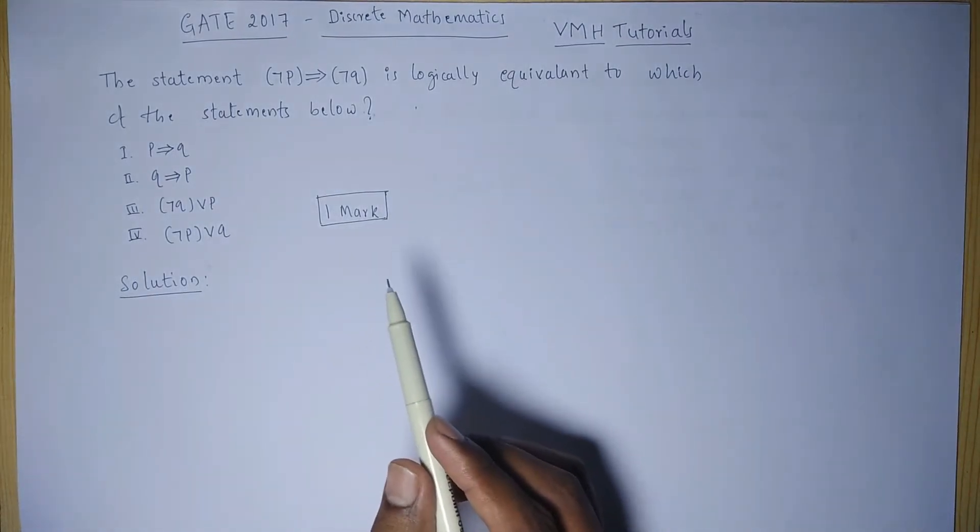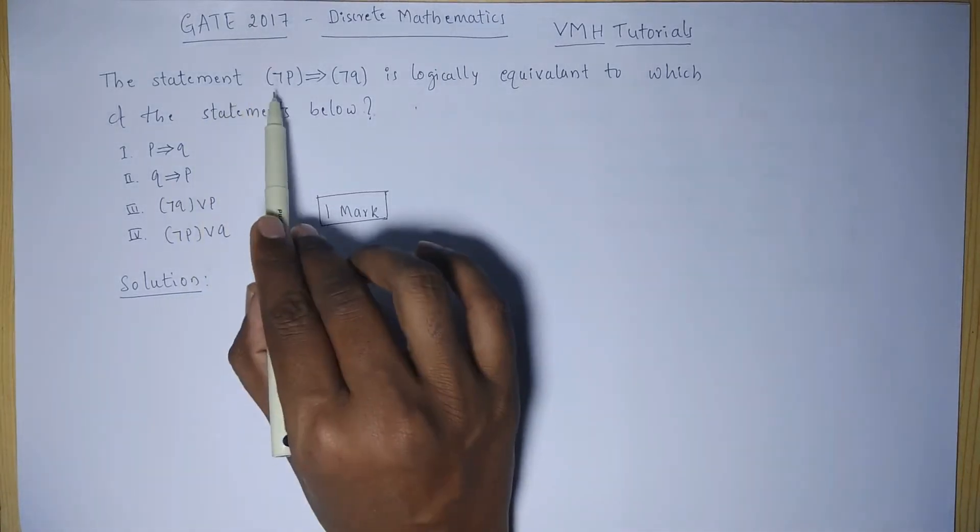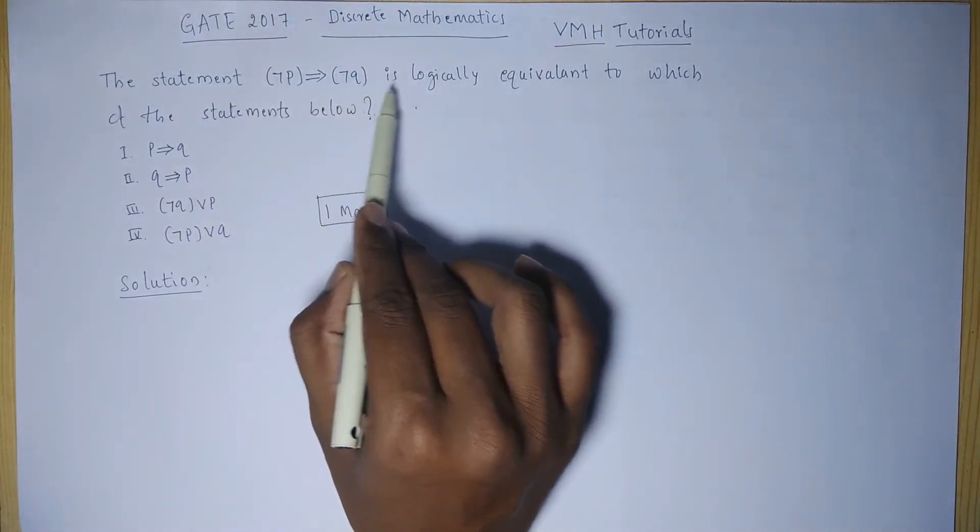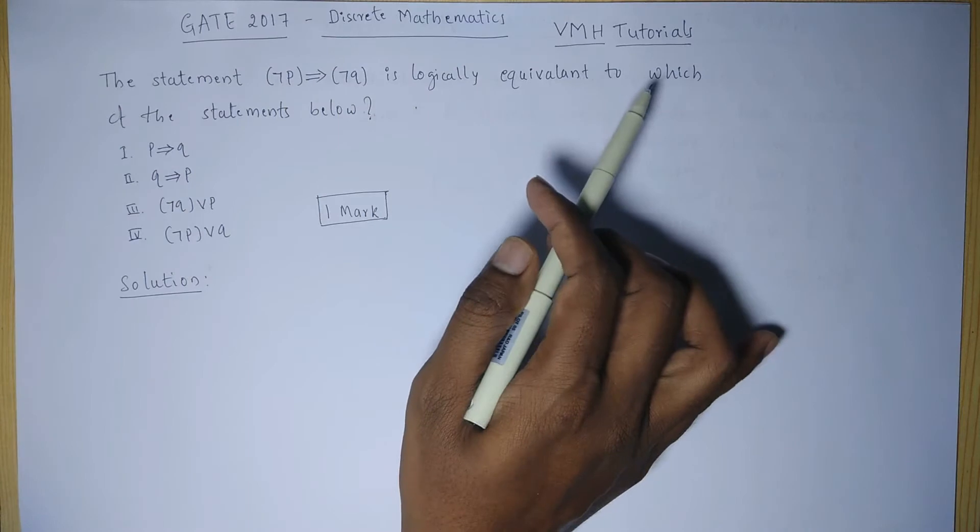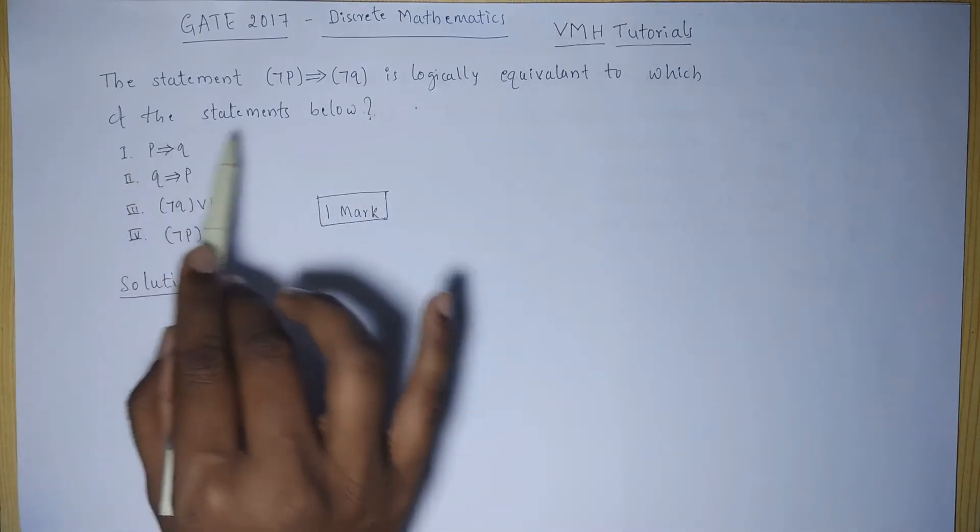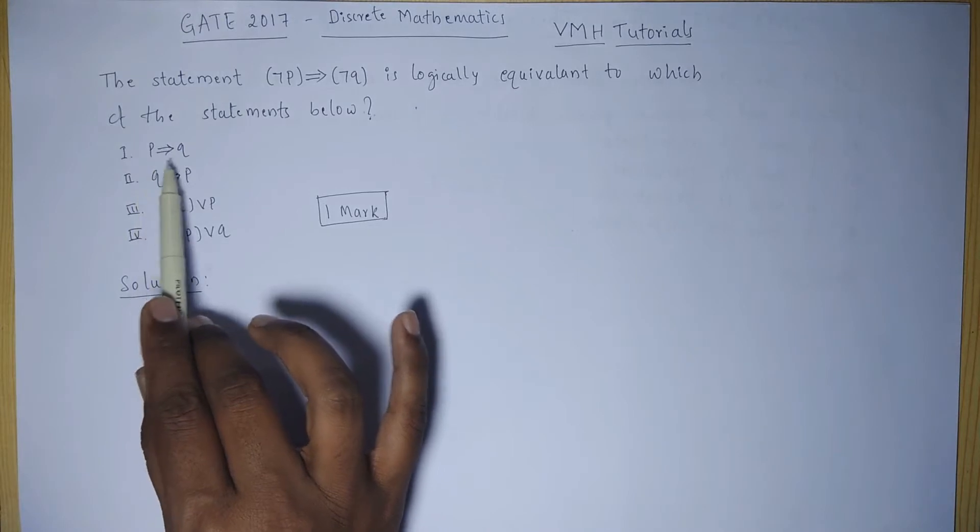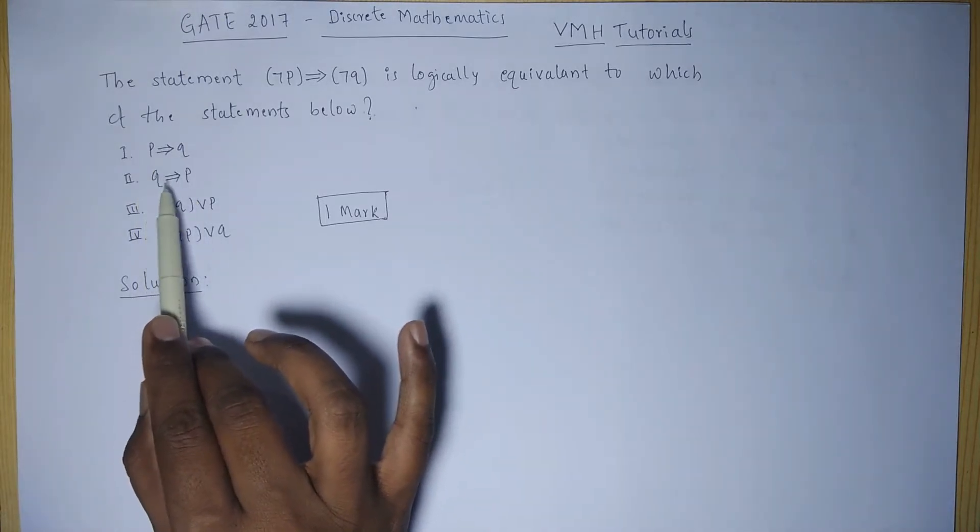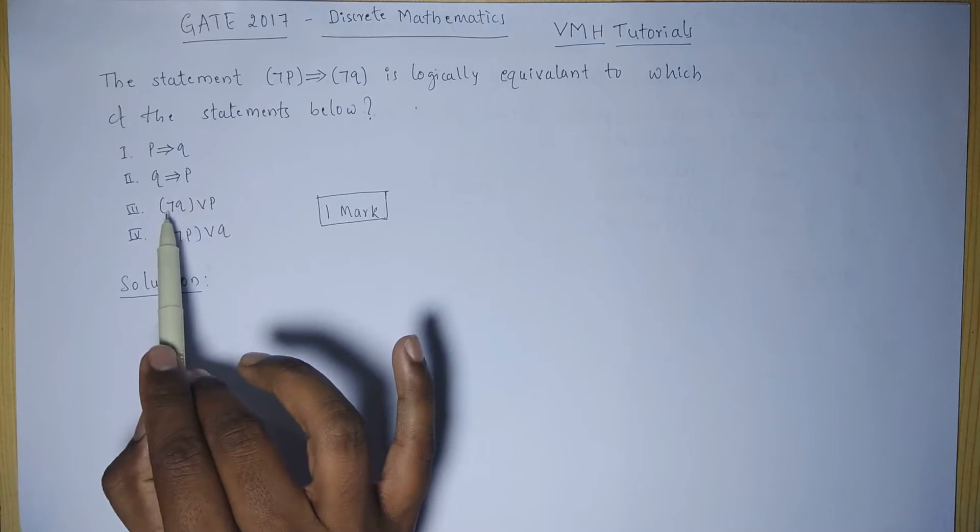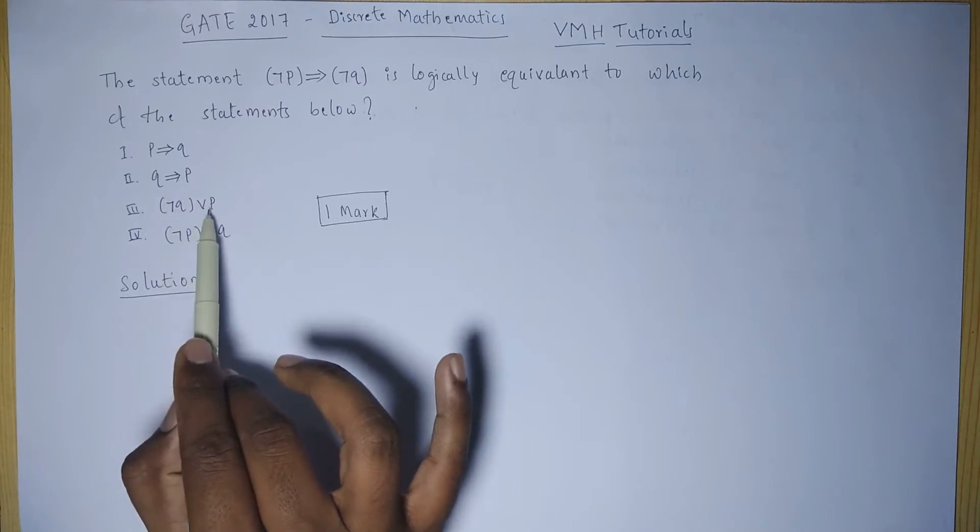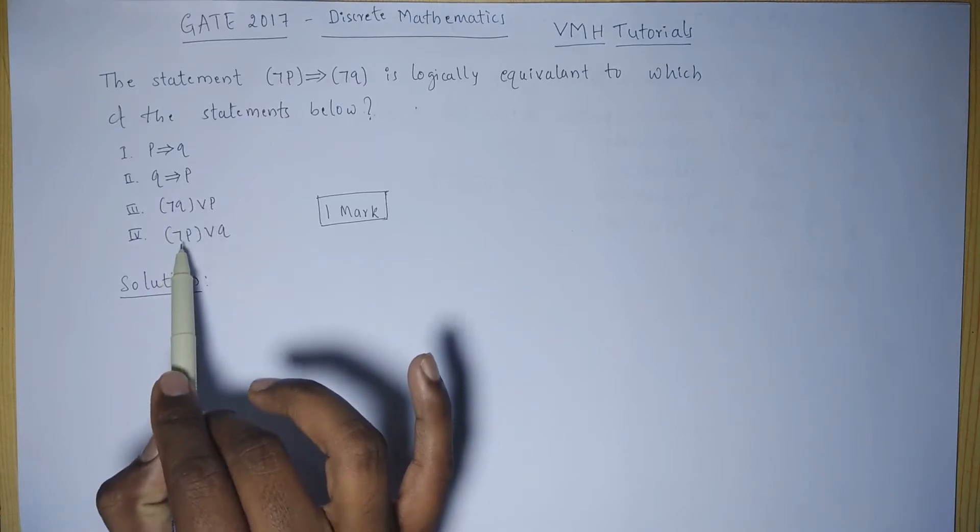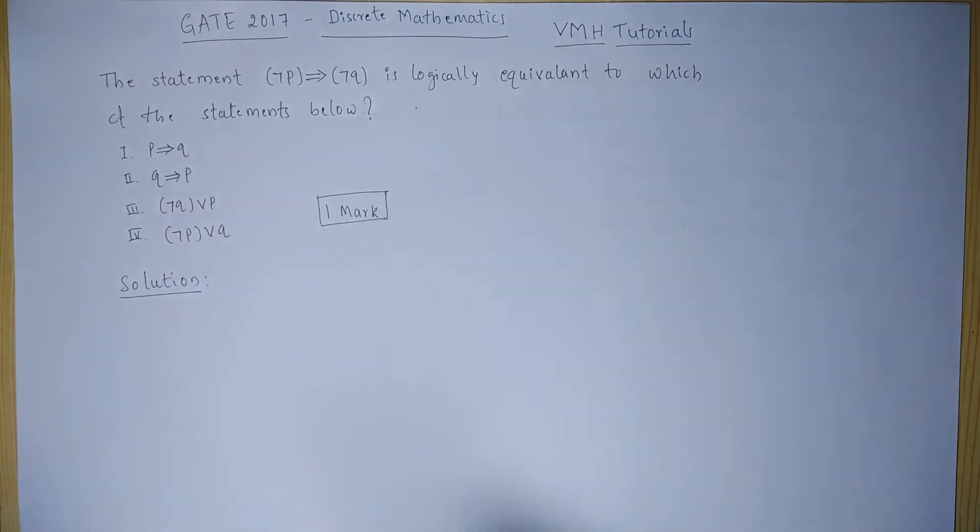The problem statement is: the negation of P implies negation of Q is logically equivalent to which of the following statements below? The statements are: P implies Q, Q implies P, negation of Q or P, negation of P or Q.